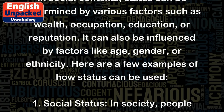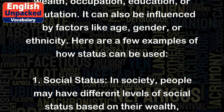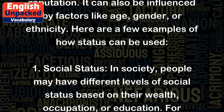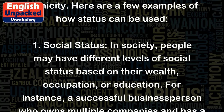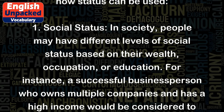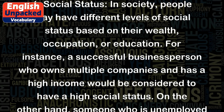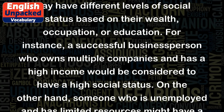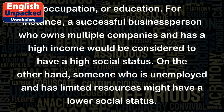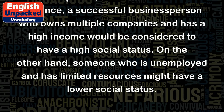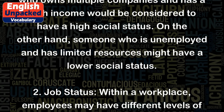Here are a few examples of how status can be used. 1. Social status. In society, people may have different levels of social status based on their wealth, occupation, or education. For instance, a successful business person who owns multiple companies and has a high income would be considered to have a high social status. On the other hand, someone who is unemployed and has limited resources might have a lower social status.